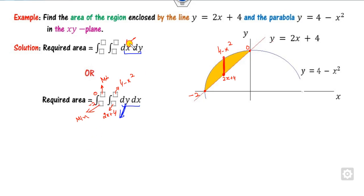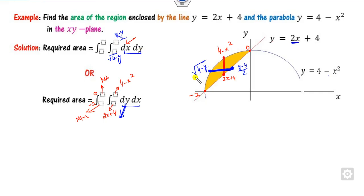If you want to use dx instead, take a horizontal strip. The value of x from the parabola is √(4 - y) and from the line is (y - 4)/2. The limits for the horizontal strip are x from (y-4)/2 to √(4-y), and the outer limits for y are from 0 to 4.